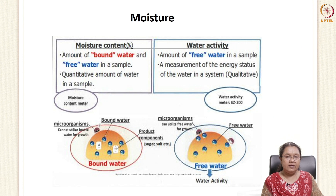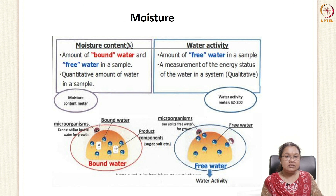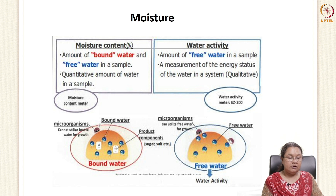In a food product, we have free water, which is the water that comes out easily, and bound water, which is held in position by the macro components. It binds tightly to macro components like carbohydrates, proteins, and fats, and is not easy to release. Bound water is not available for microorganisms, but free water can be reduced or removed so that microorganisms will not utilize it.